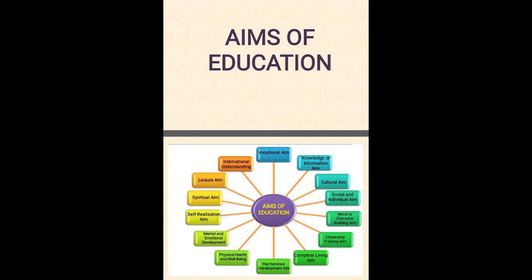Number 8: Education for individual development. Number 9: Education for social efficiency. Then individual versus social aim. Then physical health and well-being. Then international understanding. Then self-realization. Then harmonious development. Then mental and emotional development. Then intellectual aim. Then citizenship. Last, moral development. These are the aims of education which we discussed here.